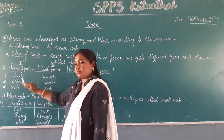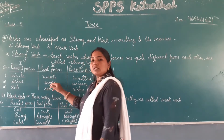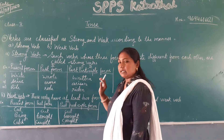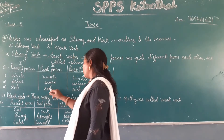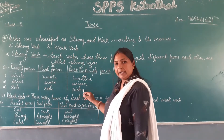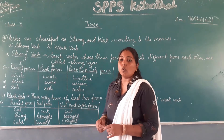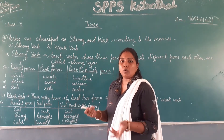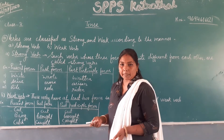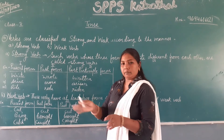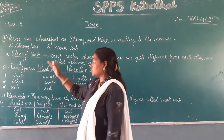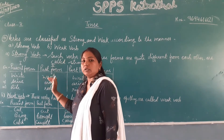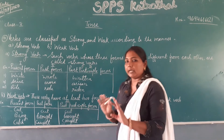Strong verbs have all three forms quite different from each other. For example: arise, arose, arisen; ride, rode, ridden; go, went, gone. So strong verbs are those verbs whose three forms are all different from one another.